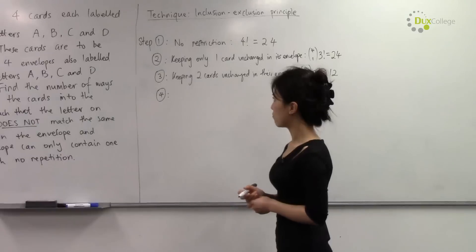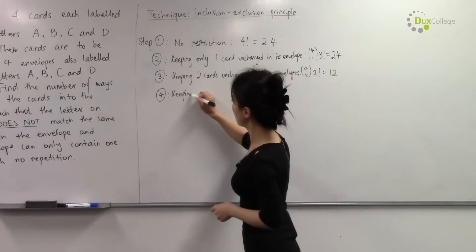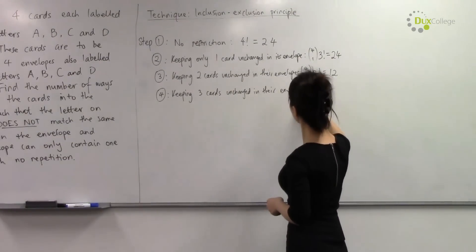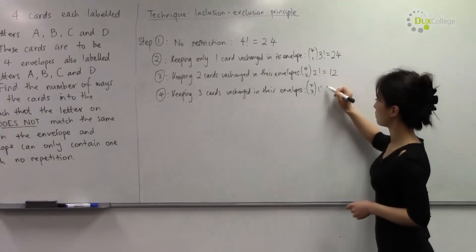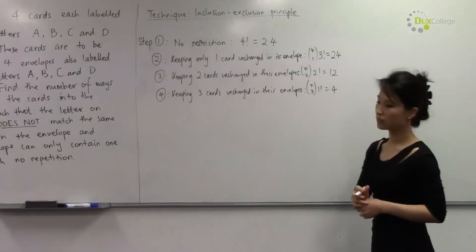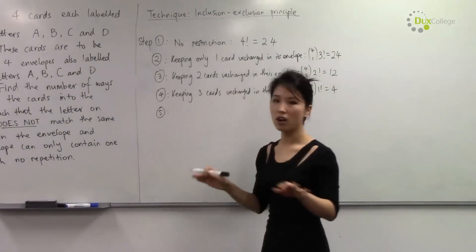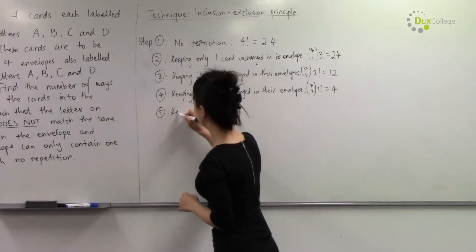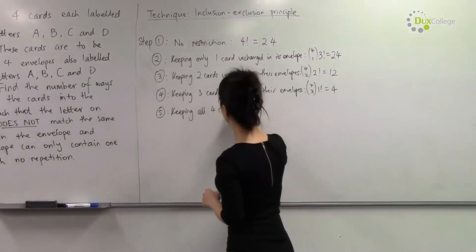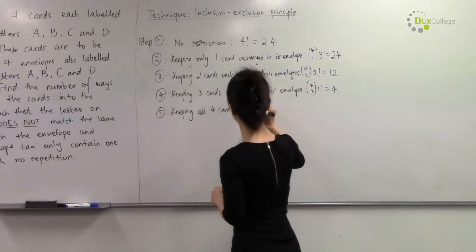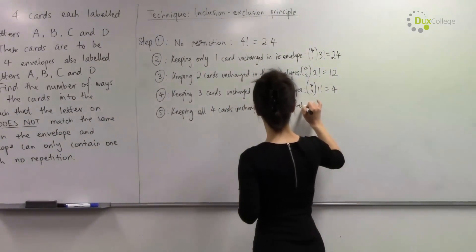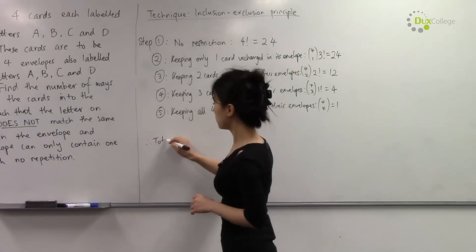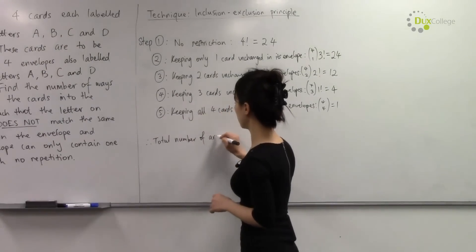Step four is to keep three cards unchanged in the envelopes: C(4,3) times one factorial. Four choose three equals four. Step five is to keep all the cards in their own envelopes — card A in envelope A, card B in envelope B, card C in envelope C and card D in envelope D — giving C(4,4), which equals one way.